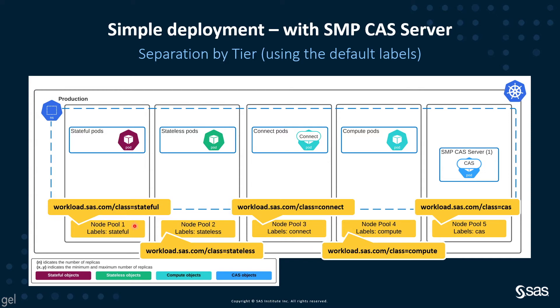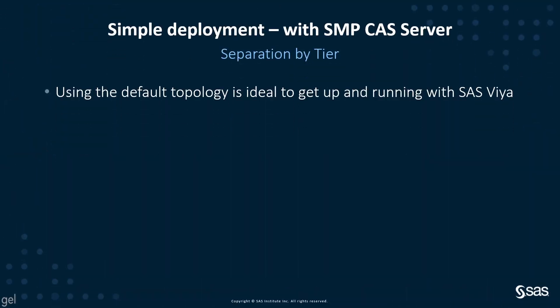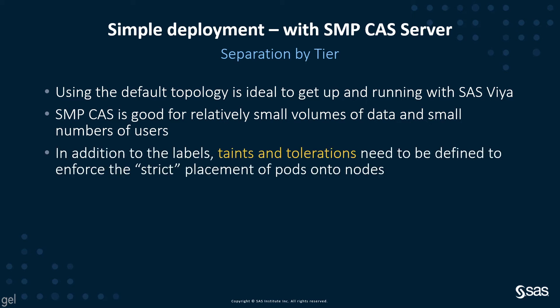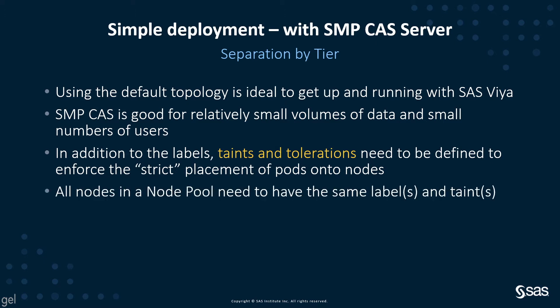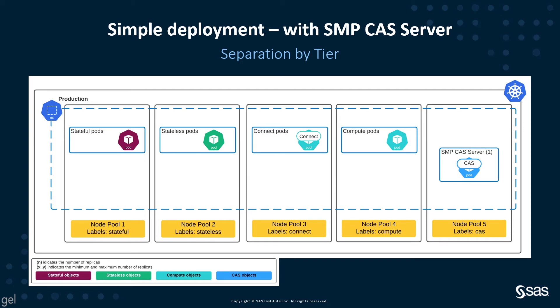We can see the actual default workload class labels that have been used — for example, the workload class: stateful, stateless, et cetera on the various different nodes. Using the default topology is ideal to get up and running with SAS Viya. SMP CAS is good for relatively small volumes of data and small numbers of users. In addition to the labels, however, taints and tolerations need to be set up to define and enforce the strict placement that we saw on the previous slide. All nodes in a node pool need to have the same labels and taints; we can't mix and match them within a node pool. So you end up with this picture as we saw before, with our five different node pools set up with our labels applied.